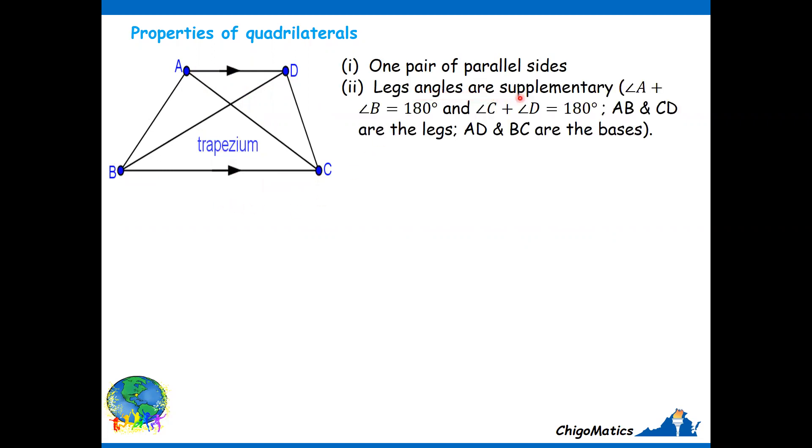Leg angles are supplementary. Now, the legs are DC and AB. But when you say leg angles are supplementary, supplementary means they add up to 180. So, if you look at angle B and angle A, if you add them, they give you 180. And again, if you remember, when you did transversal lines intersecting parallel lines.